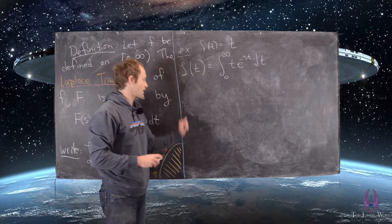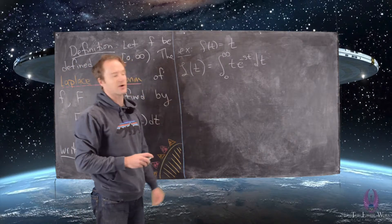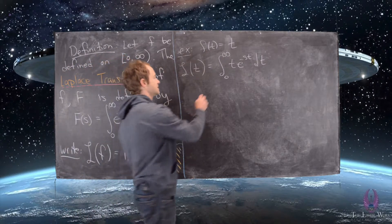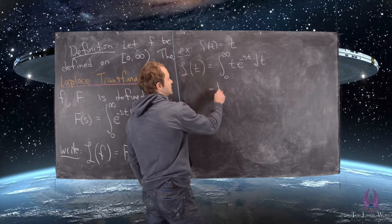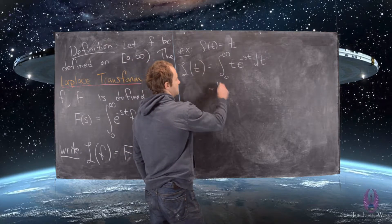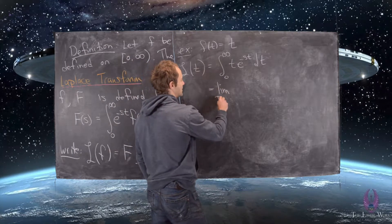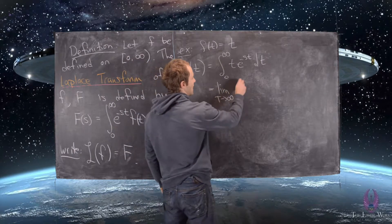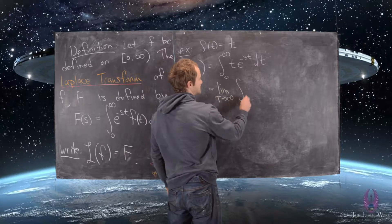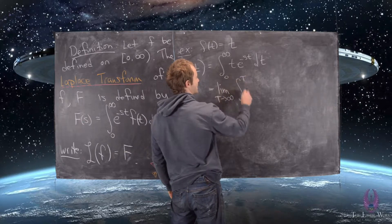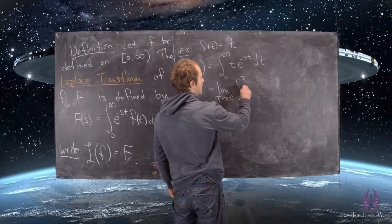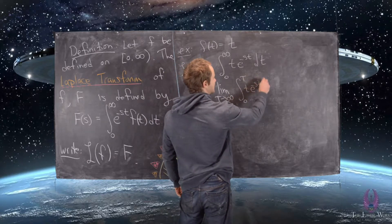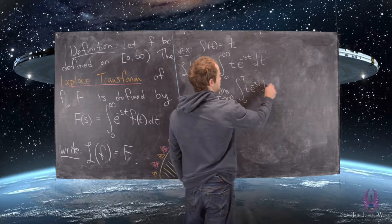Again, being careful with the improper integral for these first examples, this equals the limit as capital T goes to infinity of the integral from zero to capital T of t times e to the minus st dt.